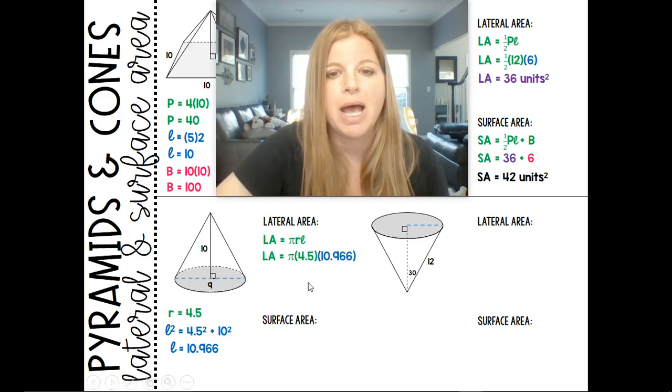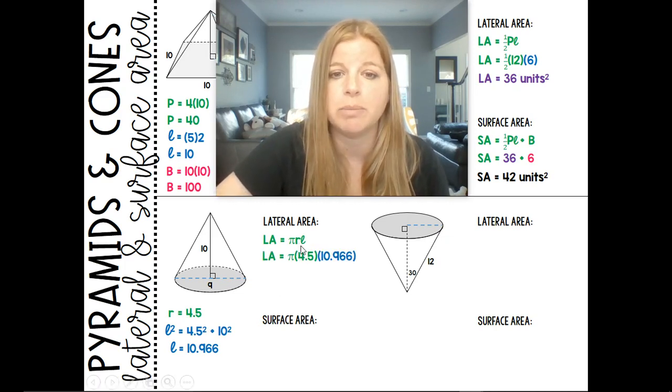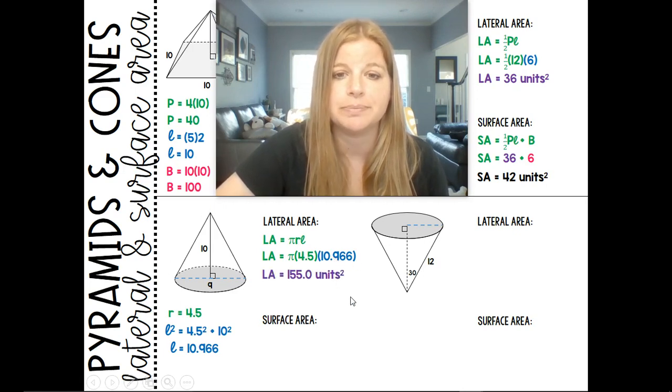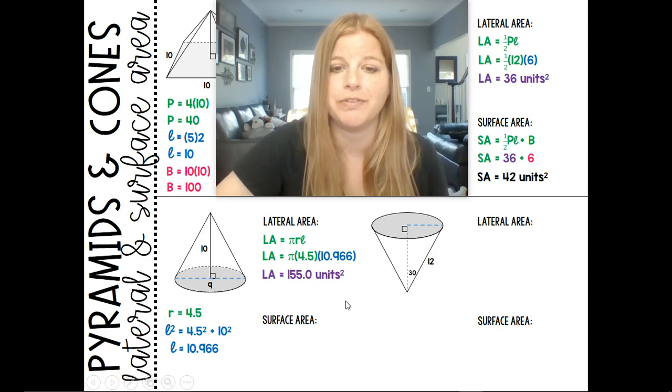We know the Pythagorean theorem. I can then go ahead, substitute in my radius of 4.5, my slant height of 10.966, and I get approximately 155 units squared.